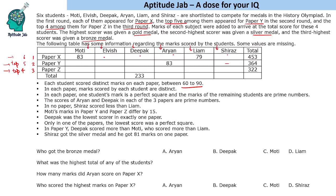In each paper, one student's mark is a perfect square and the marks of the remaining students are prime numbers. Between 60 and 90, there are two perfect squares: 64 and 81, and the remaining values will be prime numbers. Before proceeding, let us try to find out in which round we will have 64 and in which round we will have 81.